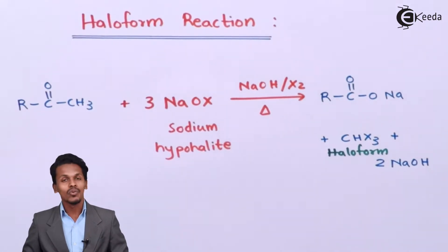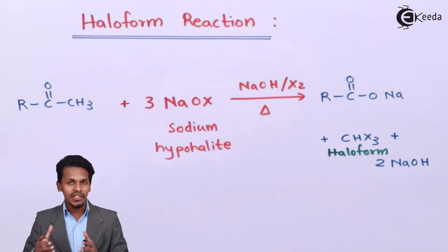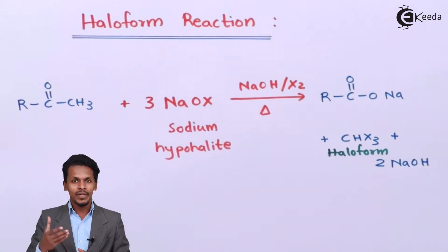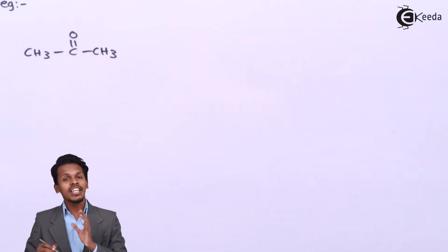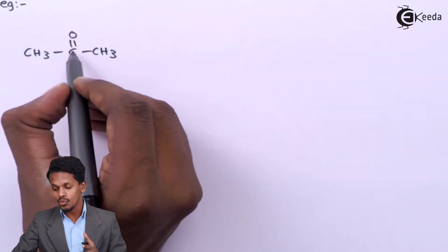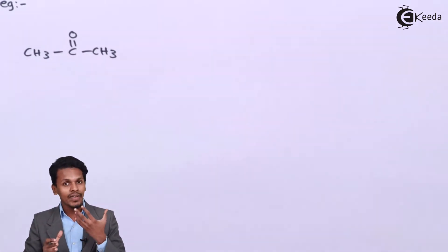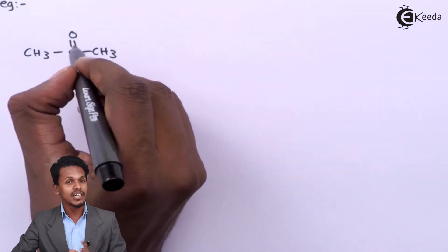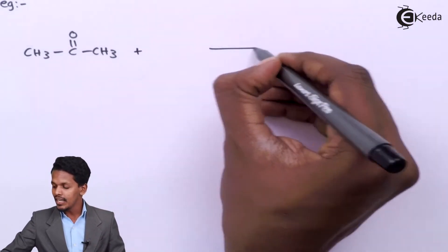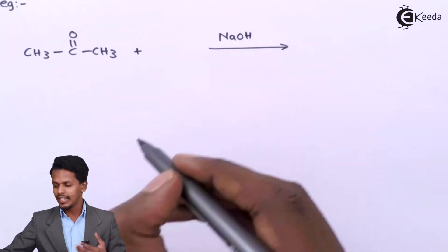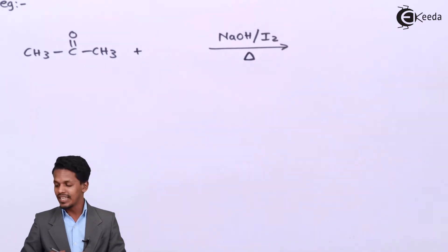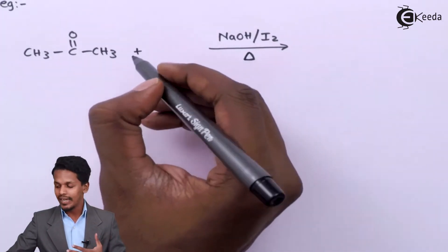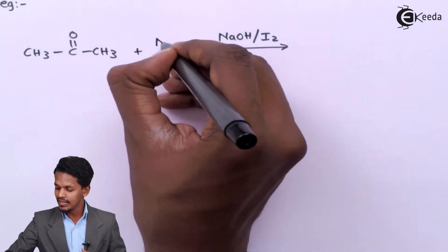That is why the reaction is known as the haloform reaction. Let me elaborate with an example. Suppose we consider acetone — CH3 C double bond O CH3 — which will undergo the haloform reaction. The main criteria for this reaction is that CH3 must be attached to C double bond O in the ketone or aldehyde. We react it with NaOH and I2 with heat, which produces sodium hypoiodite, giving us three moles of sodium hypoiodite.